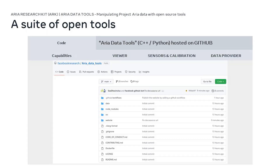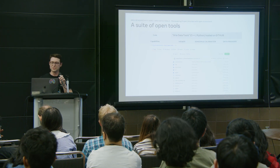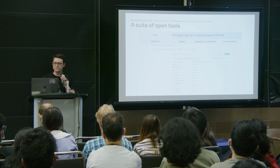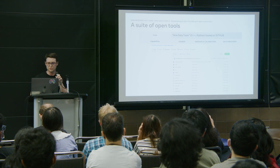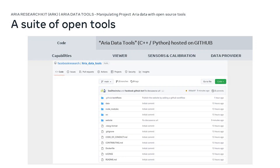ARIA Data Tools is an open source toolkit in C++ and Python released on GitHub. This tooling allows you to do three main capabilities: the first allows you to play the ARIA pilot datasets that you just saw; it's also an interface to retrieve sensor information from ARIA; and finally it's a generic data provider. See this toolkit as a demonstrator — it allows you to show how you can leverage ARIA pilot dataset and connect it with your research.